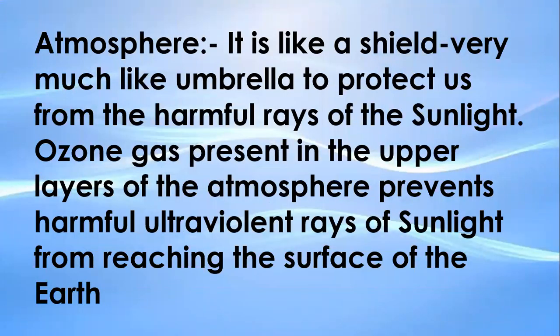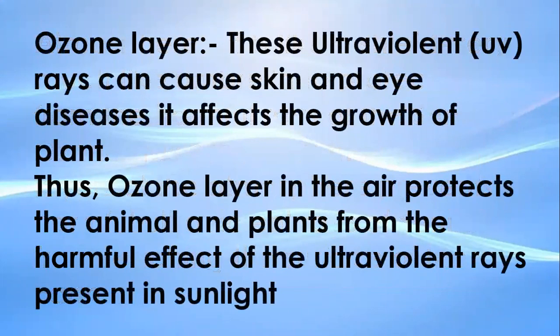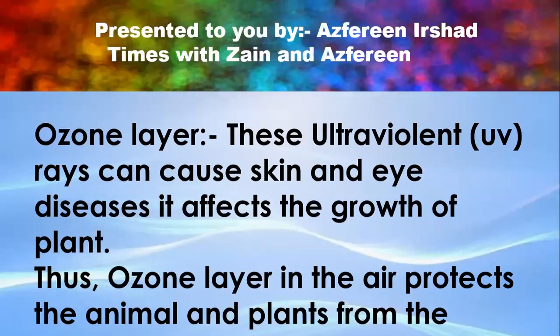Atmosphere — most of us have heard this word. It acts like a shield, very much like an umbrella, to protect us from the harmful rays of sunlight. Ozone gas present in the upper layers of the atmosphere prevents harmful ultraviolet rays of sunlight from reaching the surface of the earth. These ultraviolet UV rays can cause skin and eye diseases and affect the growth of plants. Thus, the ozone layer protects animals and plants from the harmful effects of ultraviolet rays present in sunlight.